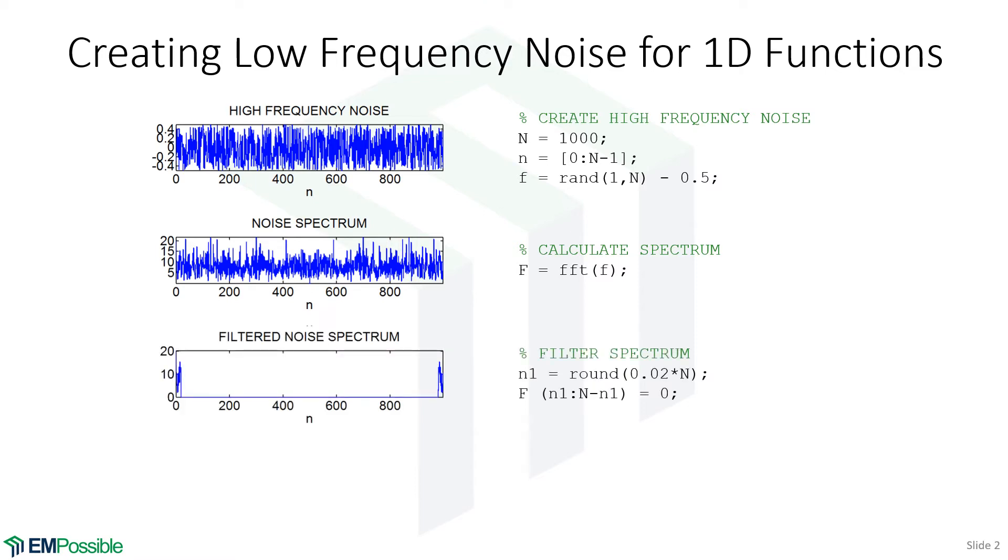What I'm gonna do now is filter it. I'm gonna filter out all of the high frequency content and I'll control it through this number, 0.02. So N is the number of samples. I will multiply by a number like 0.02. So if N is 1000, this N1 will be 20. And so then what I'll do is from 20 up to 980, I'm going to zero out everything in the spectrum.